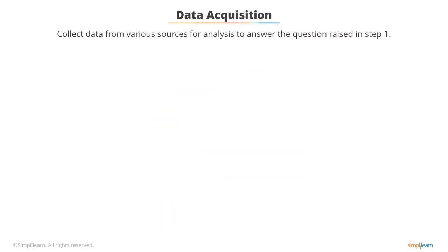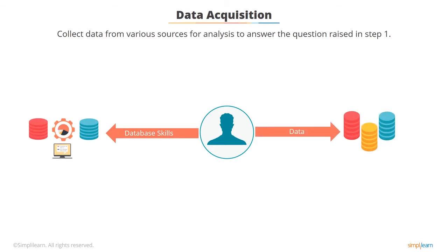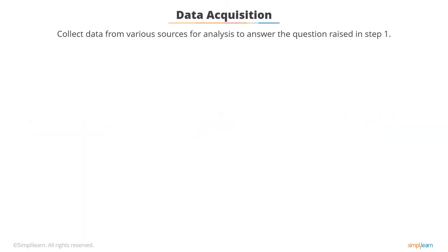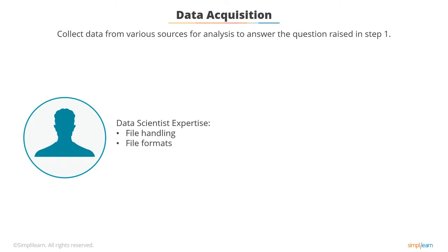To answer the question or address the business problem raised in step one, the next step is to gather or collect data. This process is known as data acquisition. The main task is to collect relevant data associated with the problem. The data could be residing elsewhere — a data scientist has to use database skills to fetch data from databases. Expertise with file handling and ability to deal with different file formats is an important skill to download and analyze the data.